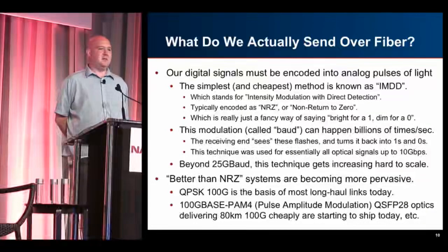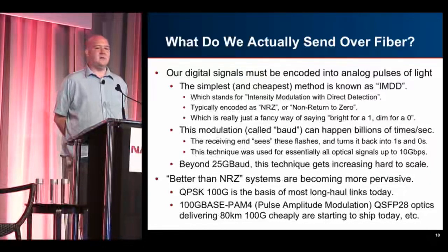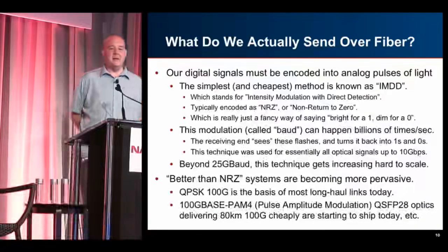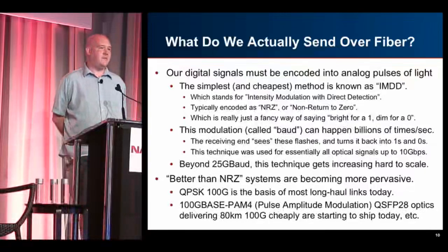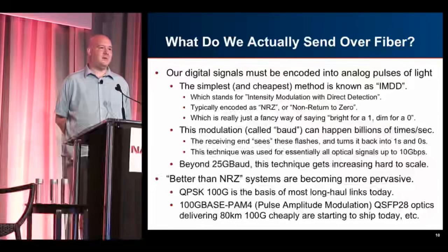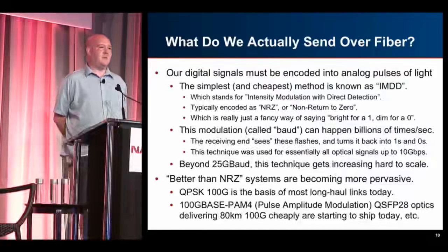The receiving end is just a little photodiode that detects these pulses and translates them back into ones and zeros. This works really well and is the basis of everything up through 10G technology. Right now the magic number is about 25 gigabaud; once you go past that it becomes prohibitively difficult. Systems that do 40 gigabaud exist but are much more expensive, and the problem gets fundamentally harder — it becomes a square problem as the baud rate goes up.